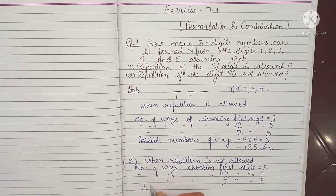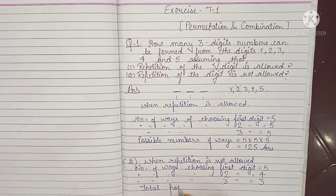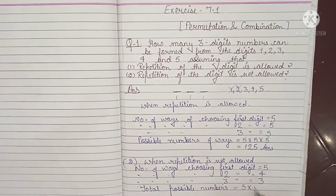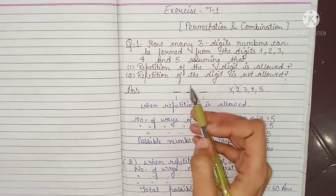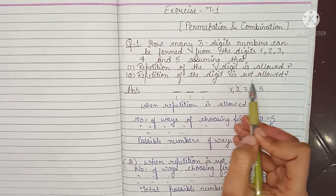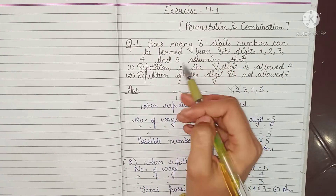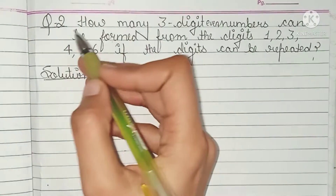So total possible number of ways is equal to 5 × 4 × 3, and this equals 60. It means when repetition of the digit is not allowed, there are total 60 ways to form a 3-digit number from 1, 2, 3, 4, and 5.